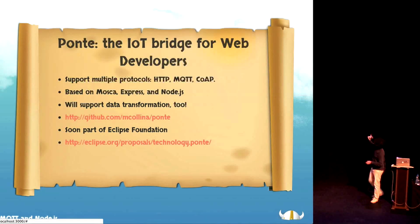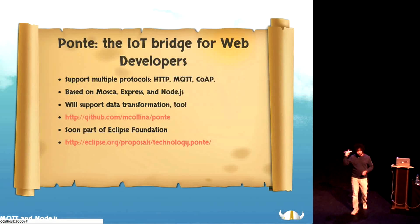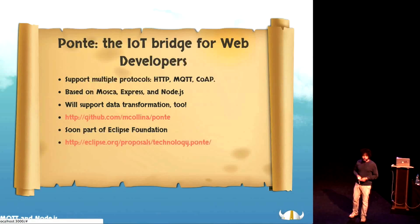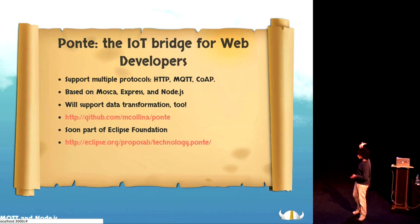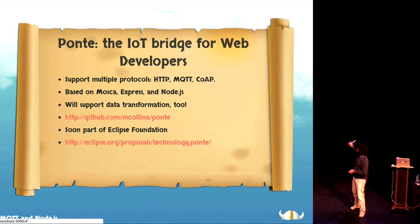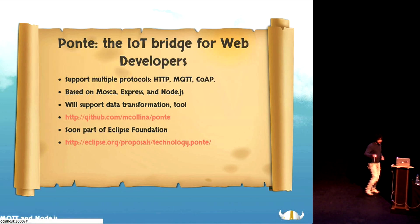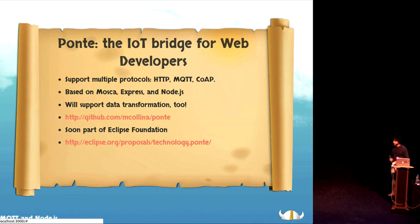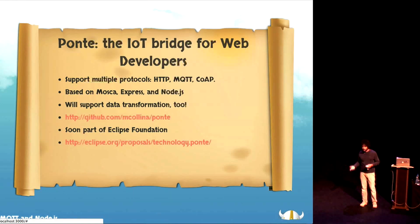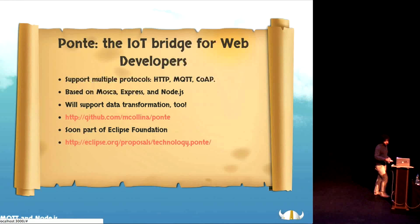I'm just adding a couple more things. There is a project called Ponti, which is a bridge for the Internet of Things. You actually want to expose your stuff to the web, and not only interact with MQTT, but also with other protocols. There is one called CoAP, which is based on UDP. It will be part of the Eclipse Foundation soon — we will have a Node.js project inside the Eclipse Foundation. What the Eclipse Foundation is doing is very hot on the machine-to-machine space, and it's a cool way for getting new people on board.